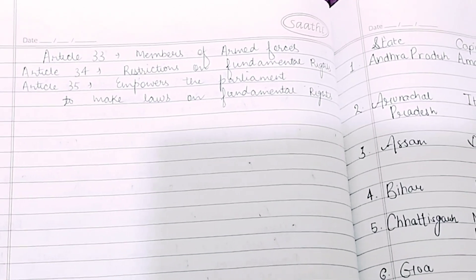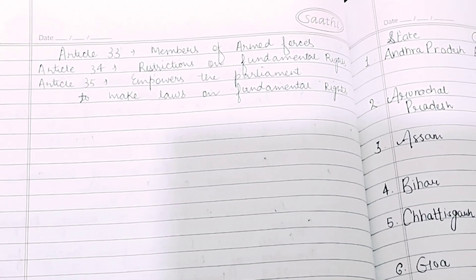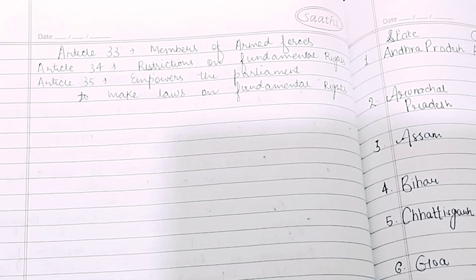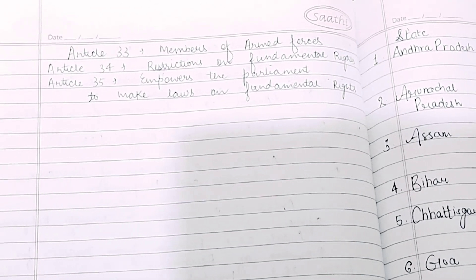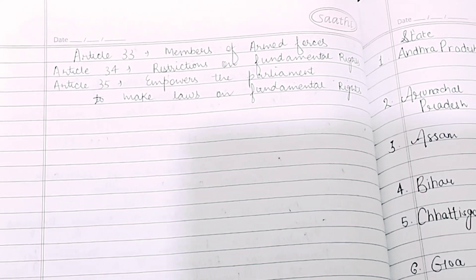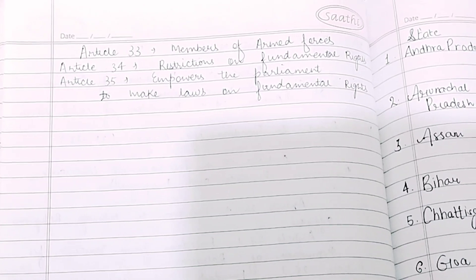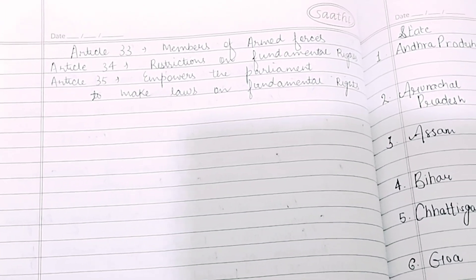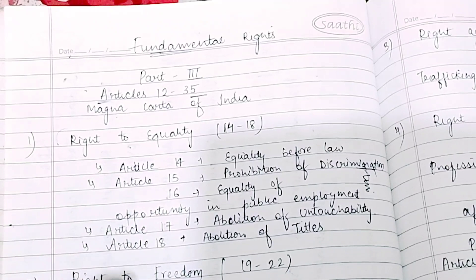After this, we have Article 33, which deals with the law of the armed forces. Article 34 is the restriction on fundamental rights during martial law. The last article of Part 3 is Article 35, which empowers Parliament to make laws on fundamental rights. So this was Part 3 of our fundamental rights.